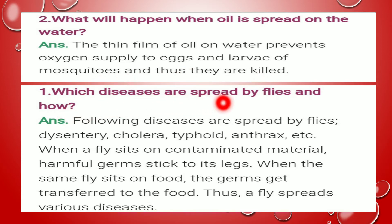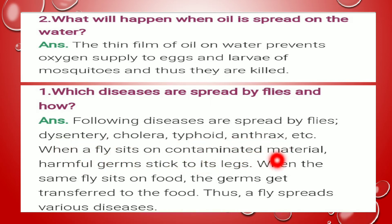Which diseases are spread by flies and how? Following diseases are spread by flies: dysentery, cholera, typhoid, anthrax. इस तरह की बिमारियाँ मक्खियों से फैलती हैं. When a fly sits on contaminated material, जब कोई मक्खी दूषित जगह पर बैठती है, harmful germs stick on its legs — इसके टाँगों पर germs चिपक जाते हैं. When the same fly sits on food, the germs get transferred to the food. वो germs उस खाने पर चले जाते हैं. Thus a fly spreads various diseases — और जब हम वो खाना खाते हैं तो वो बिमारी हमारे अंदर आ जाती है.